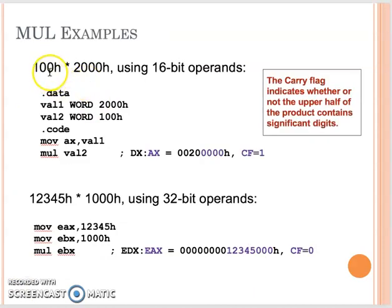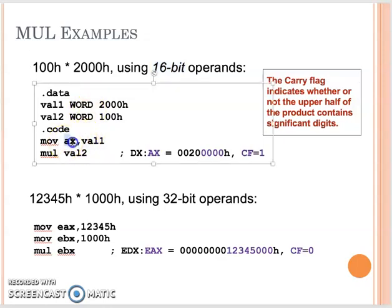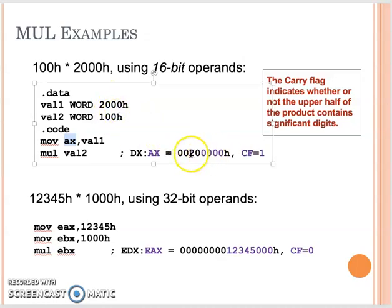For example, if we have 100H times 2000H using a 16-bit operand, we make both values word-sized. By default, the multiplicand for a 16-bit operand is AX, so we move the value 1 into AX. AX then multiplies the value 2. So 2000H times 100H gives a result where the value needs both AX and DX to hold — that's your combined product value.